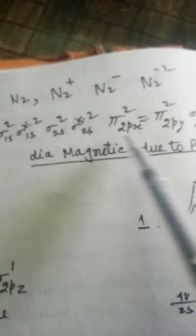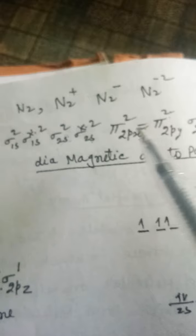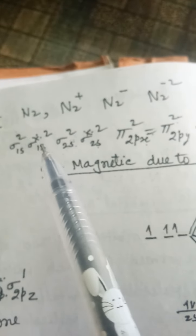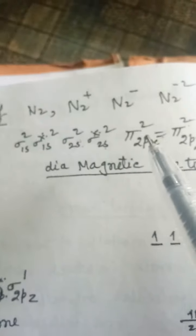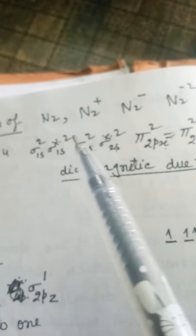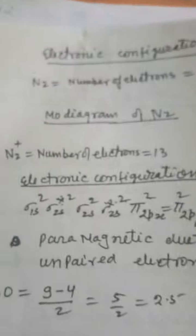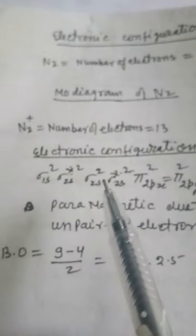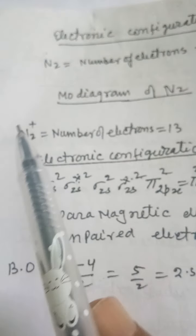So the 14 electrons of the nitrogen molecule are distributed in different molecular orbitals. This is the electronic configuration of the nitrogen molecule.